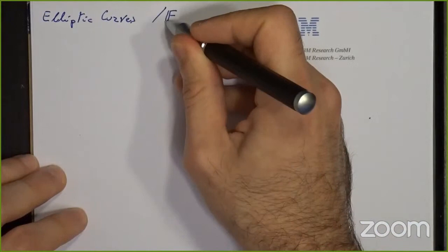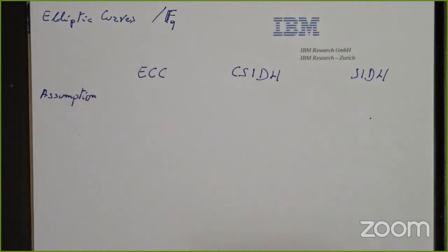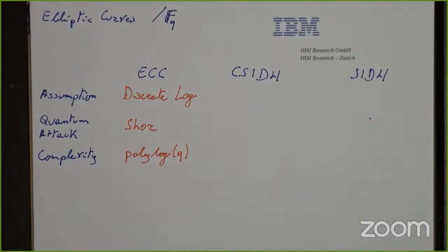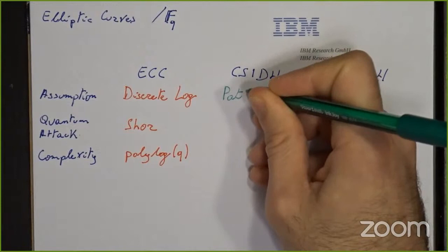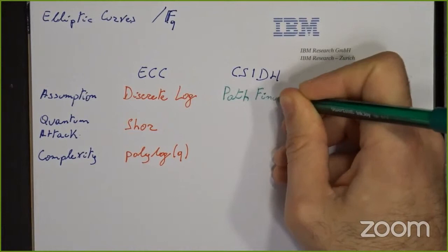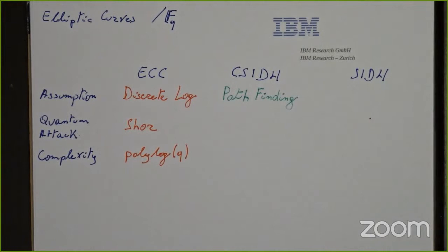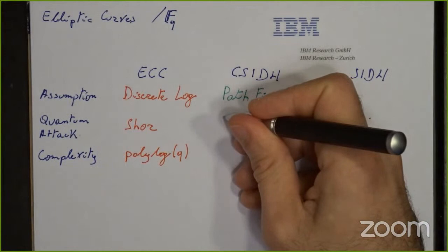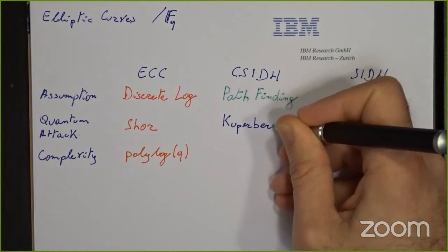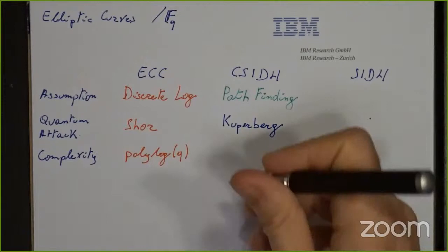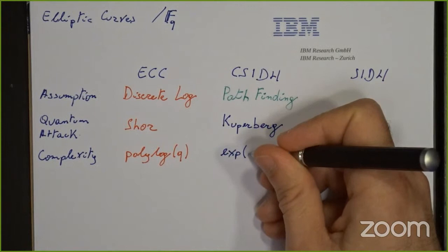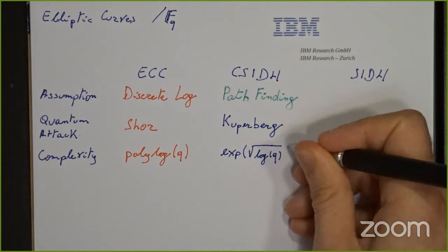But is it quantum safe? If pathfinding is equivalent to discrete logarithm, and if discrete logarithm is broken by Shor's quantum algorithm, why is C-side not broken too? The strength of C-side comes from the fact that the vertices of the graph do not form a group. This is sufficient to stop Shor's algorithm, as far as we know. But the class group is also the weakness of C-side. If Shor's algorithm does not apply, a different quantum algorithm due to Kuperberg does apply. Kuperberg's algorithm has sub-exponential complexity. Research on the exact quantum security of C-side is still a very active area.